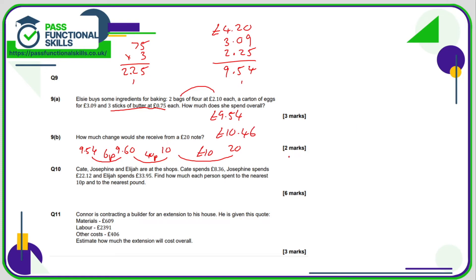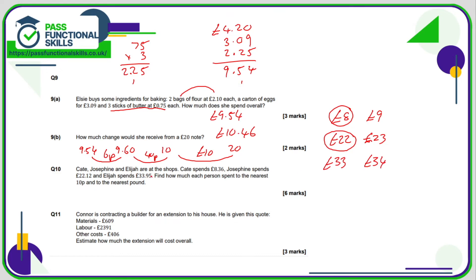Question ten: rounding to the nearest pound. £8.36 is between £8 and £9; 36 pence is less than 50p so that rounds down to £8. Josephine's amount is between £22 and £23; 12 pence is less than 50p so it rounds down to £22. £33.95 is between £33 and £34; 95p is much closer to the next pound up, so it rounds up to £34. To the nearest 10p: £8.36 is between £8.30 and £8.40; 6 is greater than 5 so we round up.